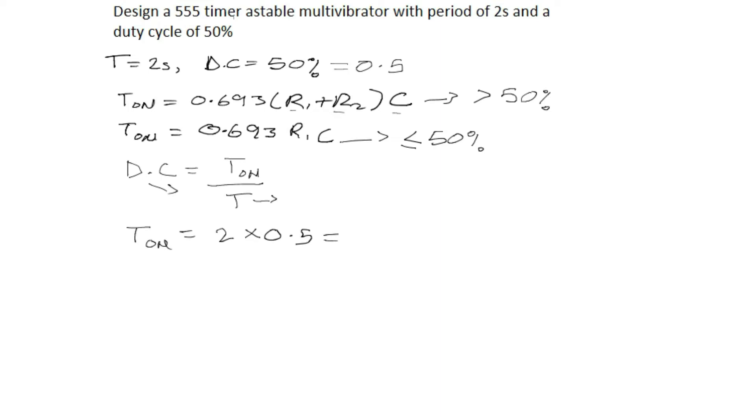So that means it will be 2 times 0.5. From here we can see our T_on, if you take your calculator and calculate, is 1 second. Now we have our 1 second to be our time on. Now how do we get our time off? We know that period T is the summation of time on plus time off.